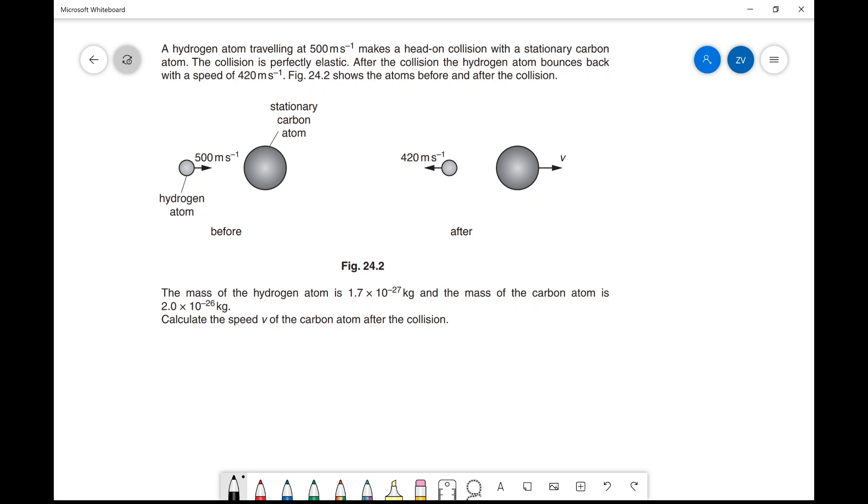I've got a hydrogen atom moving to the right that collides with this stationary carbon atom. After the collision, the hydrogen atom changes direction and moves to the left.